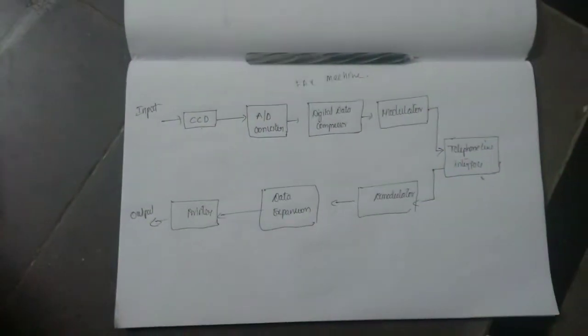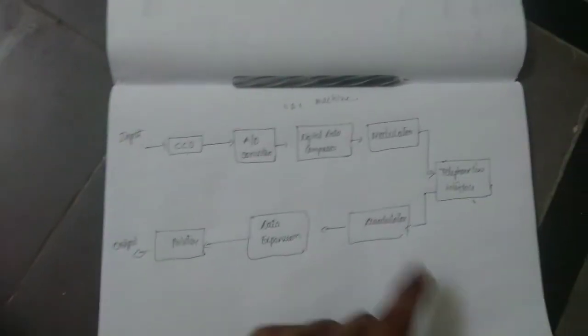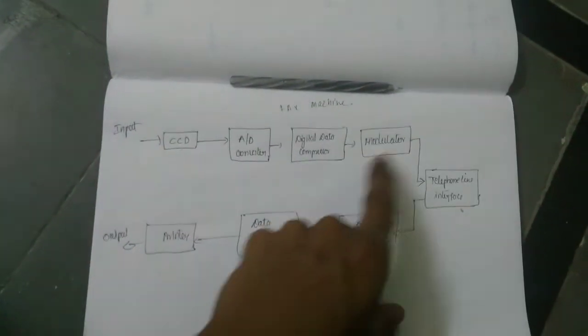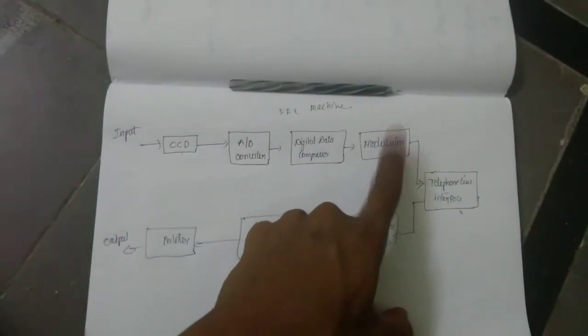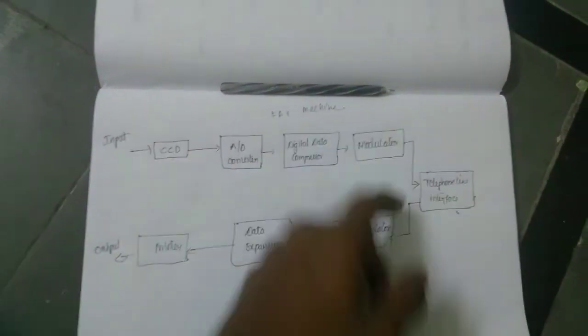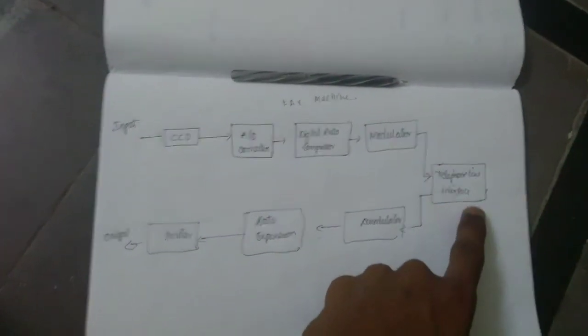The digital data compressor compresses the data in digital form. After compression, the signal goes to the modulator. The modulator then transmits the signal over telephone lines.